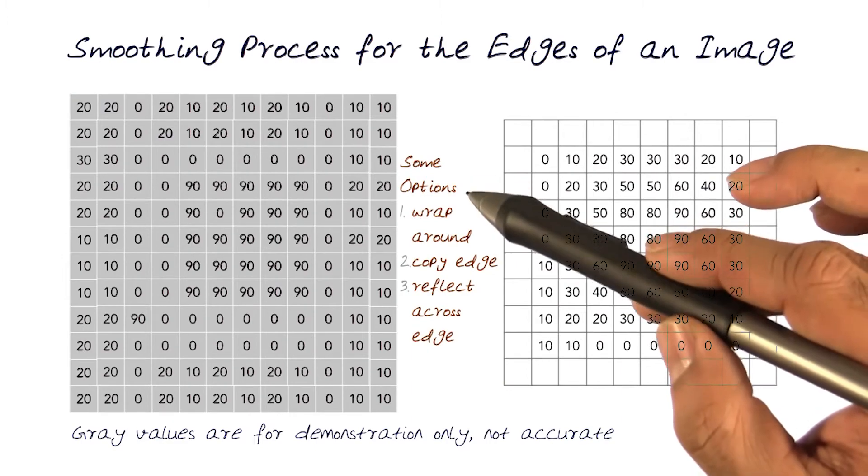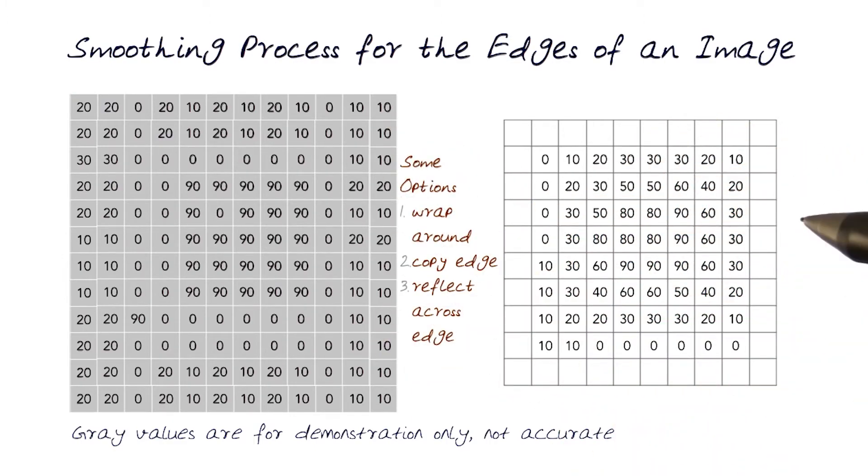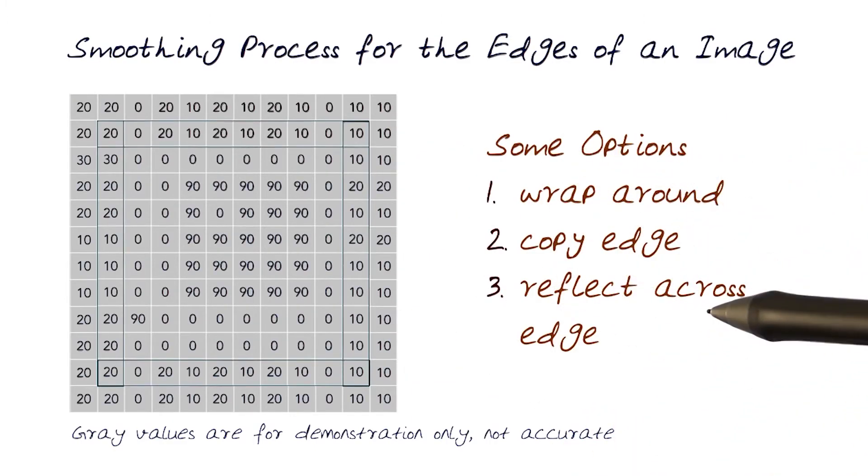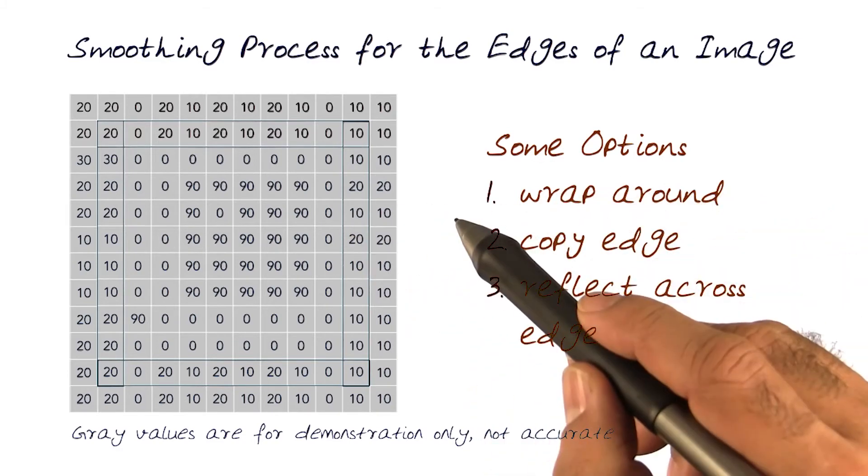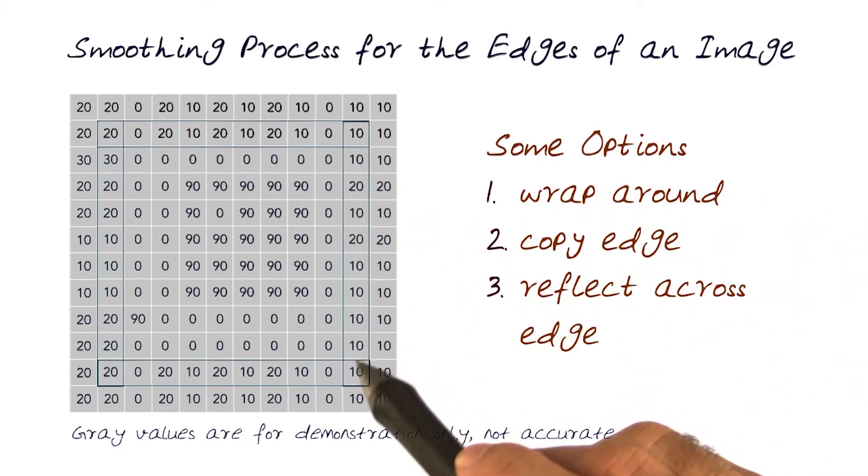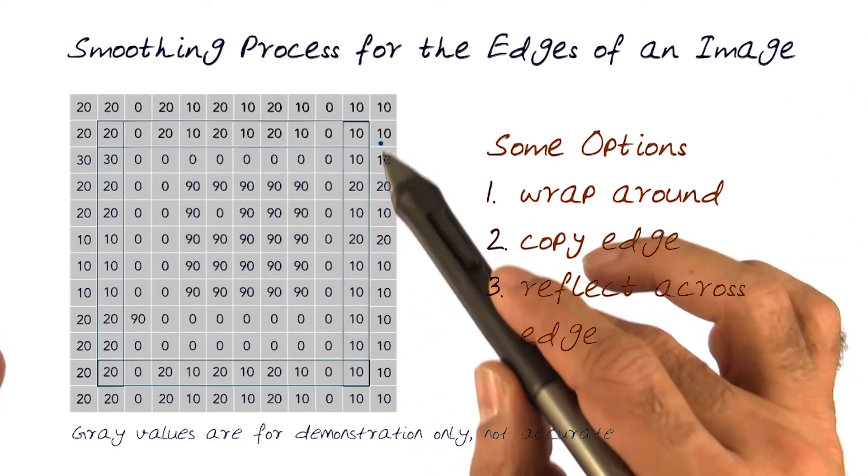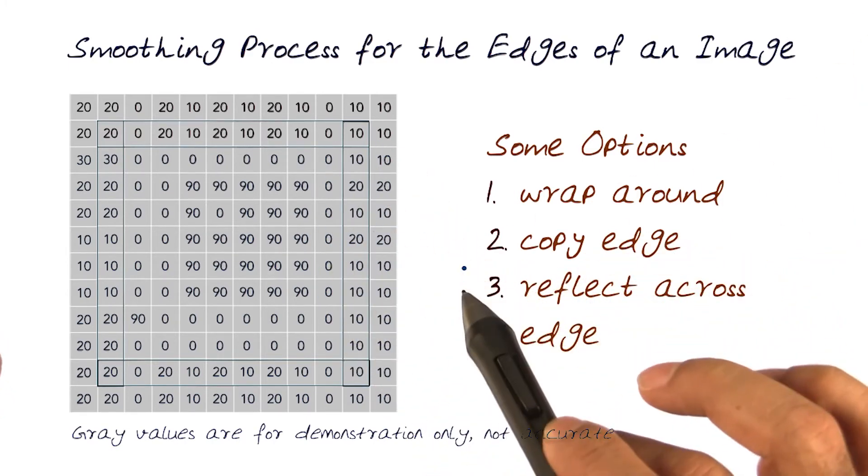There are many strategies usually available for how we can actually add this information. So some of the options of doing this is we can wrap the information around, as we kind of did, or we can just copy it from one to the other, or we can reflect the information across making this be the axis and take these values and move them around.